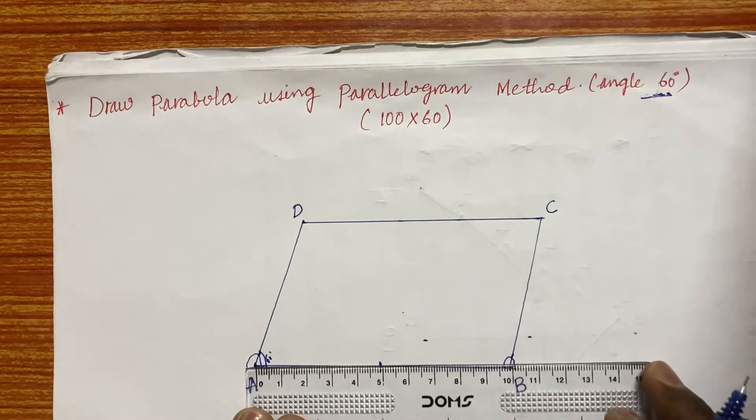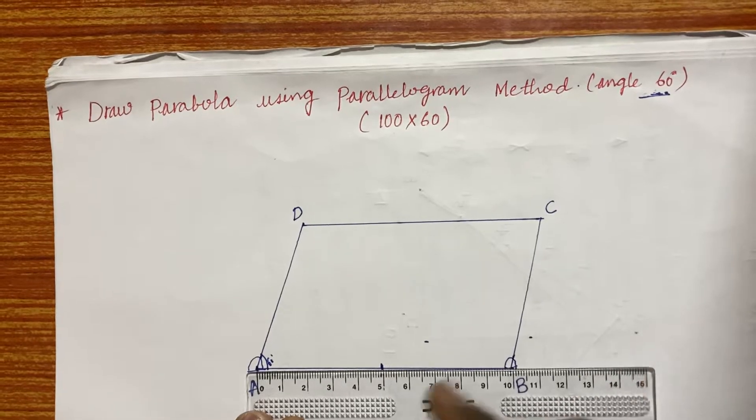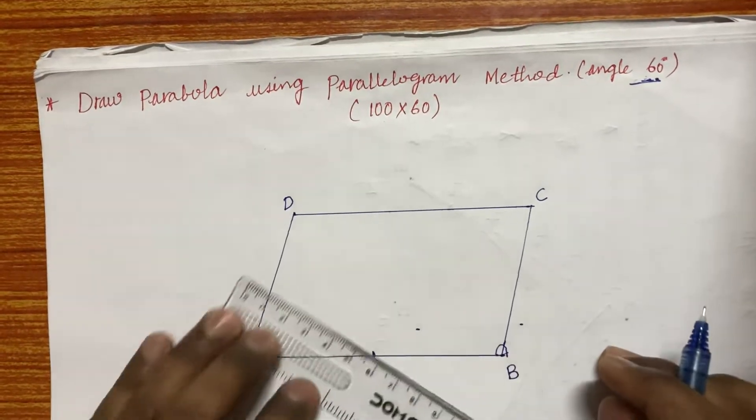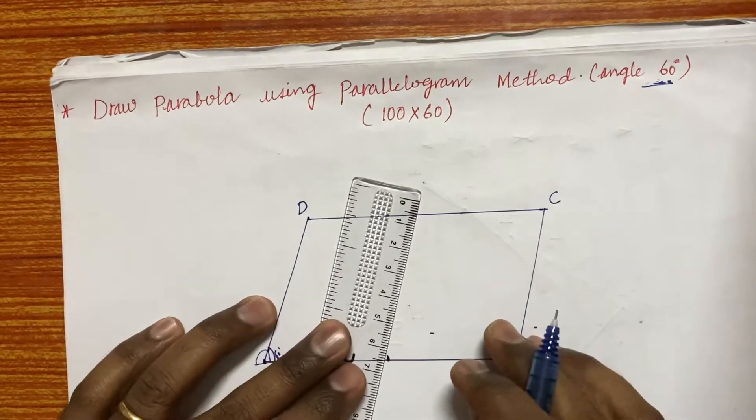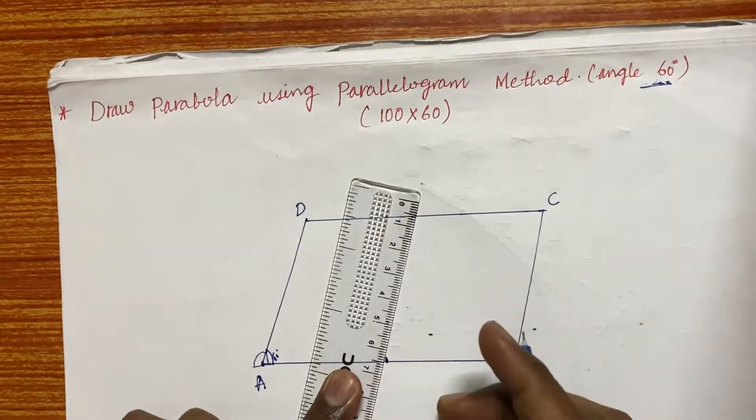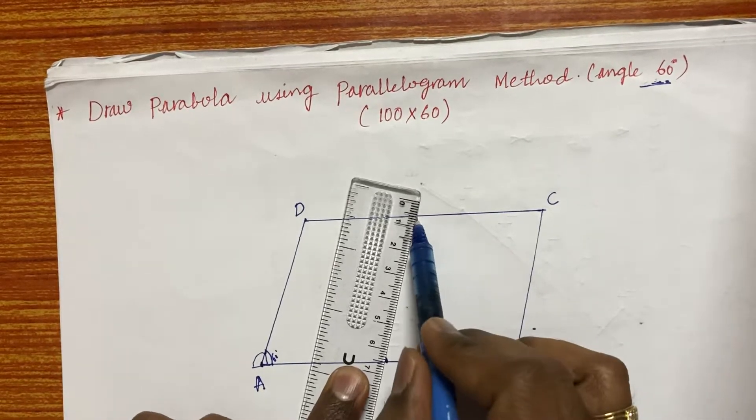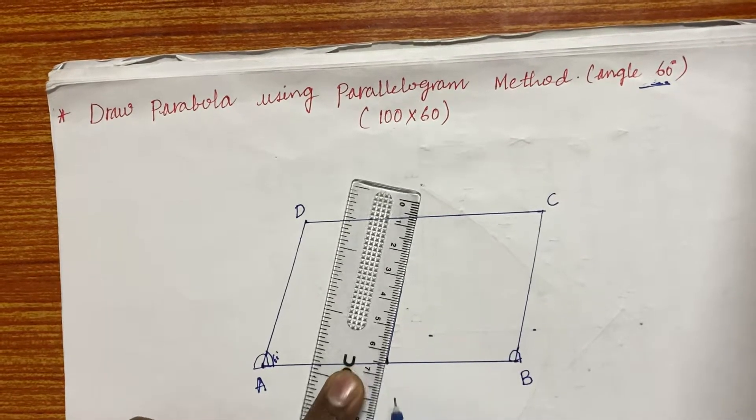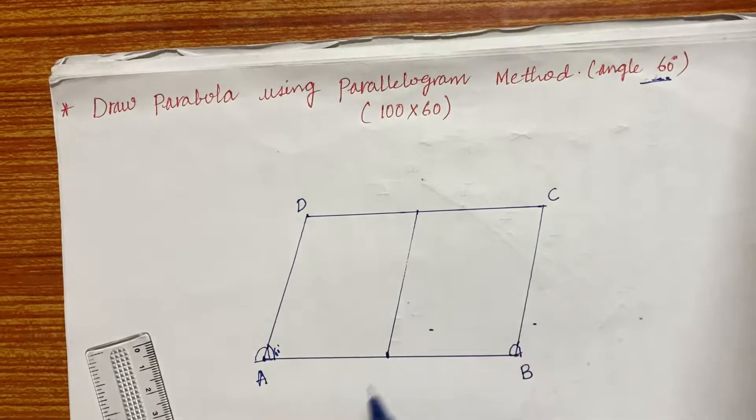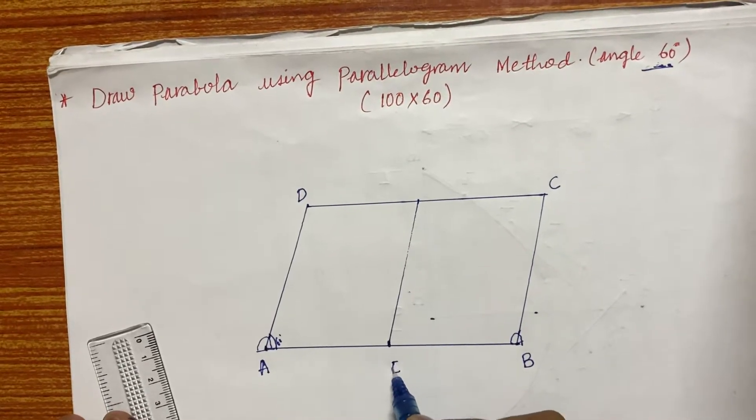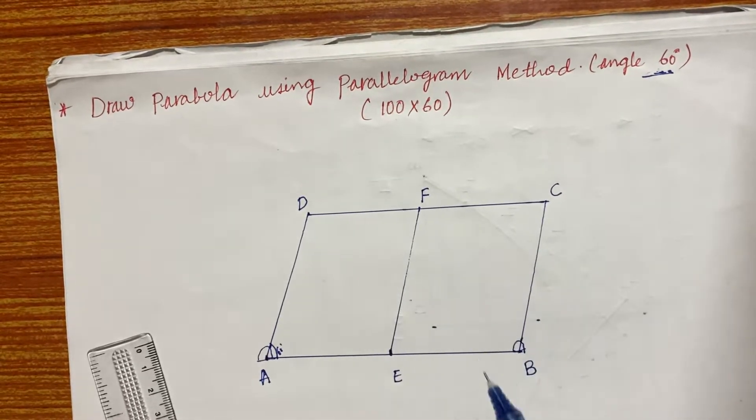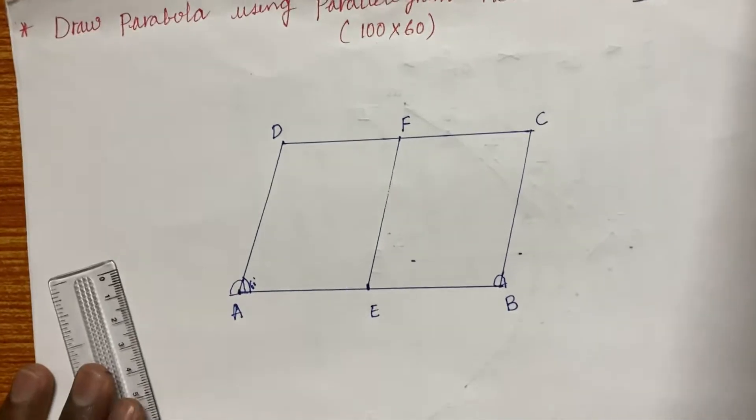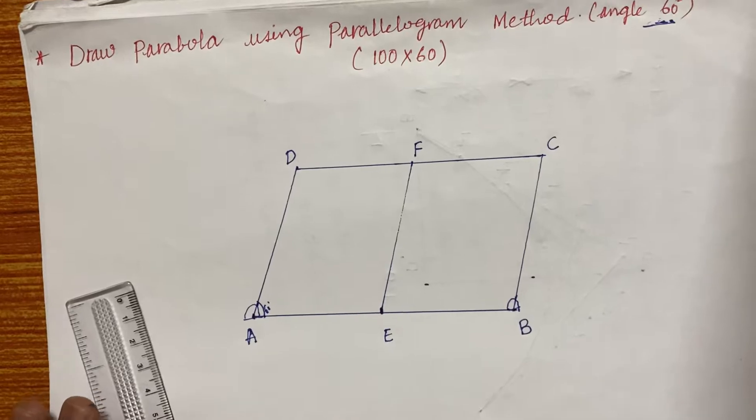Later, I need to divide this AB line into two halves. I mean this is 50 is a division. Along AD you are going to locate a line here in between at 50. Why? Because AB is 100. Let this be A, B, C, D. I am giving a name to it as AF. So here in this space we are supposed to trace the parabola curve using a parallelogram method.